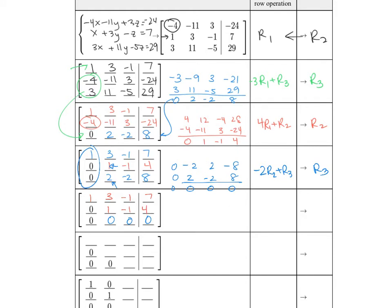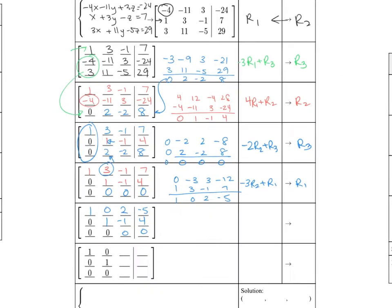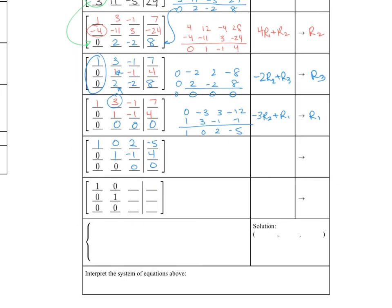We can keep going. Let's make the 3 in row 1 into a 0, so we need negative 3 times row 2 added to row 1 to make the new row 1. That's 0, negative 3, 3, negative 12 added to 1, 3, negative 1, 7, giving 1, 0, 2, negative 5. So row 1 is 1, 0, 2, negative 5, and row 2 is 0, 1, negative 1, 4. The bottom row is all zeros. You can already notice that row of zeros means we're going to have infinite solutions. These two equations represent the same plane — they were just multiples of each other.